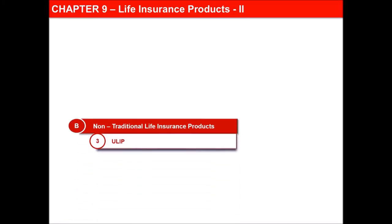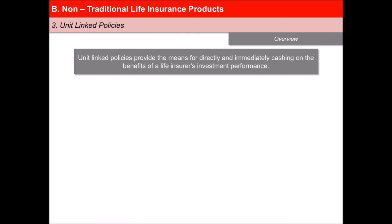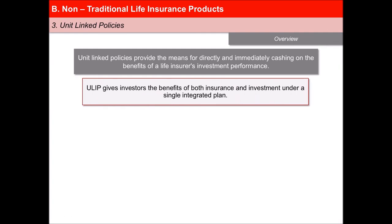In this last video of the lesson Life Insurance Products 2, we will learn about unit-linked policies. These policies provide the means for direct and immediate cashing on the benefits of a life insurer's investment performance. Unlike a pure insurance policy, ULIP gives investors the benefits of both insurance and investment under a single integrated plan.